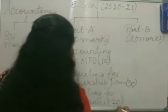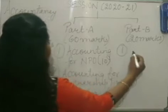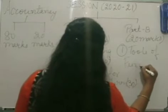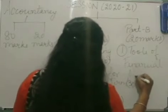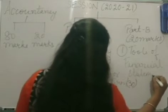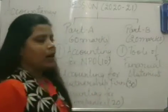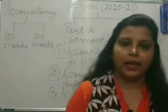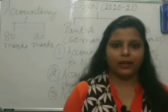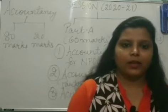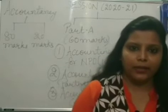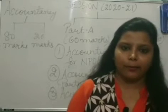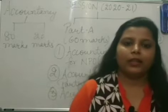Coming to Part B, it consists of two units, and the first unit is Tools of Financial Statement. In this unit, we will be discussing about how a company compares its profit with other companies — that is, inter-firm comparison. For example, Reliance company versus AHL company.